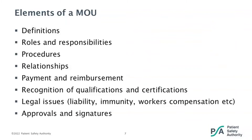The elements of a memorandum of understanding include: definitions of the key terms used within the agreement; the roles and responsibilities of the individual parties; any procedures for requesting or providing assistance; types of acceptable payments, if any, in an emergency situation; notification procedures and interoperable communications; relationships with other agreements amongst jurisdictions; workers' compensation insurance coverage; treatment of liability and immunity; recognition of qualifications and certifications; sharing agreements as required; and authorized officials from each participating agency will collectively approve and sign the memorandum of understanding.